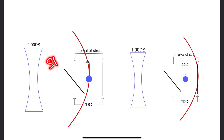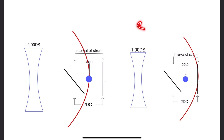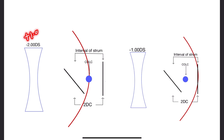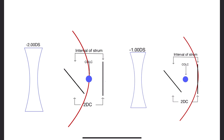In step one, by using the best vision sphere, we are bringing the circle of least confusion onto the retina. That's why the patient has the maximal visual acuity provided by any spherical lens. In step two, by adding half of the estimated cylindrical power — which in our case was +1 — the total will be -1 diopter sphere. This step brings the back focal point onto the retina and moves the circle of least confusion in front of the retina.